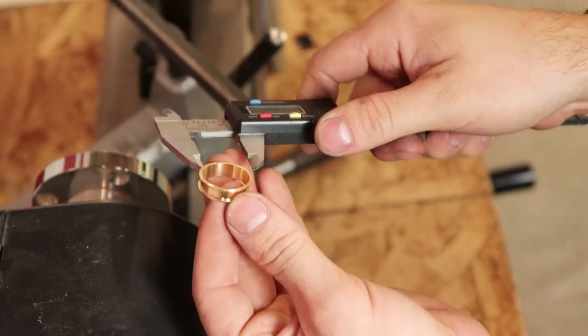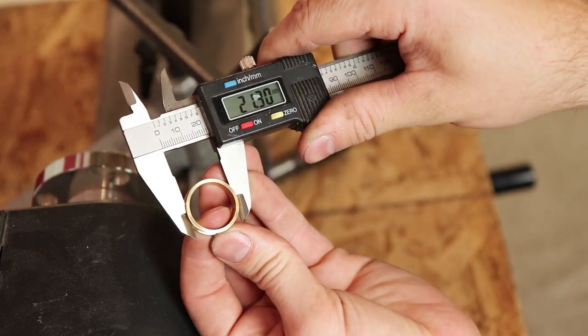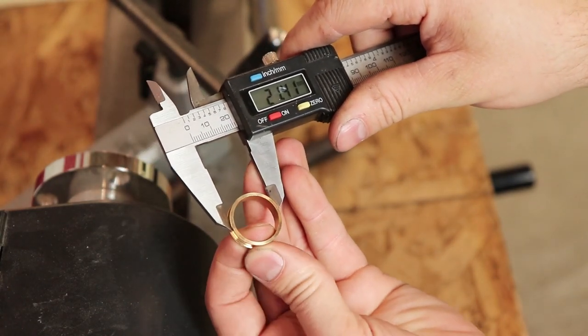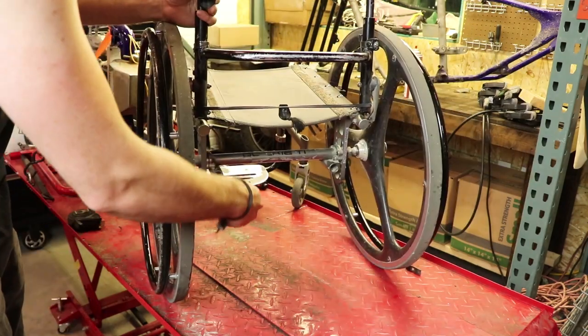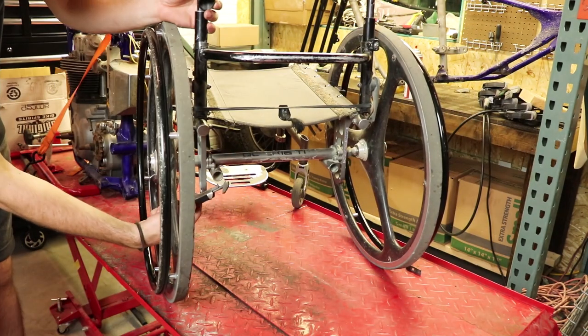So the first thing we need to do is measure the inside diameter of this channel ring that I made and compare it to the different dimensions on the wheelchair to find a piece that's going to fit inside that inlay.